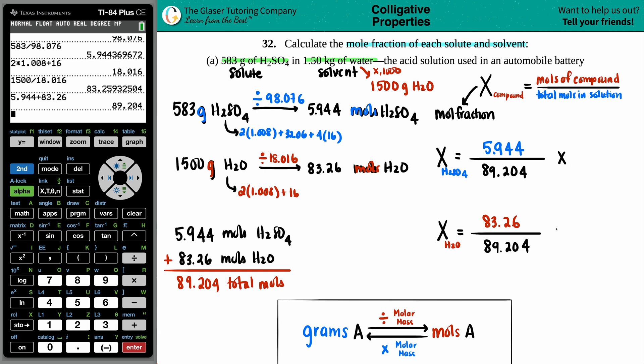Let's find it out. H2SO4, 5.944 divided by 89.204, zero point, and I guess three sig figs here, so 0.0666 as the mole fraction for H2SO4. And then 83.26 divided by the total moles, and you get 0.933.